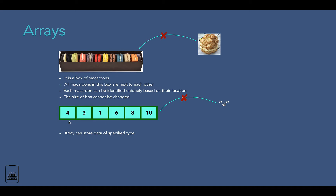The next property is that elements of an array are located in contiguous locations in memory, meaning they are next to each other with no gap — just like the macarons in the box. The third property is that each element of an array has a unique index. The index of the first element always starts at zero. So if you want to access the first element you use index zero, and if you want to access the fourth element you use index three. From left to right, indexes go 0, 1, 2, 3, 4, and 5, increasing sequentially.